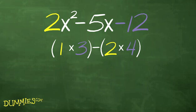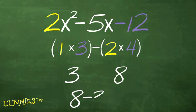Multiply the 1 from step 1 times the 3 from step 2, and then multiply the 2 from step 1 times the 4 from step 2. The two products are 3 and 8 whose difference is 5.